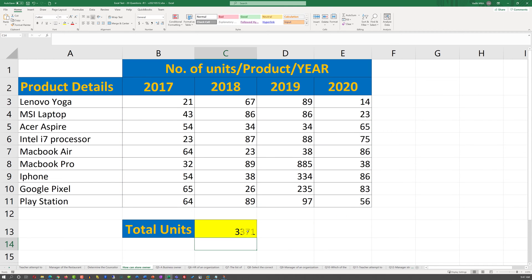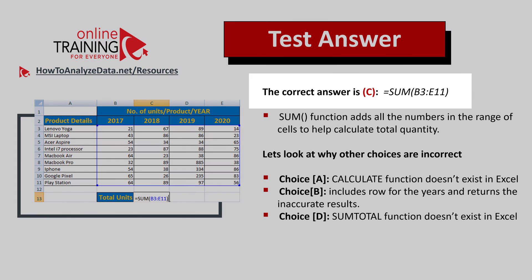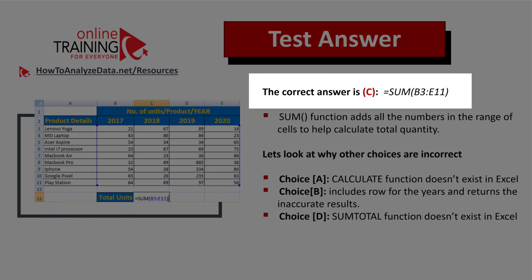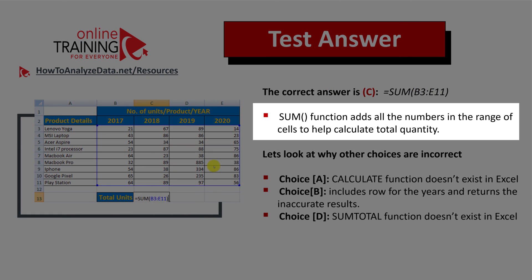We select the SUM formula and then select the range for which we're trying to add the sum. Once you hit Enter, you will see the total number of items that have been sold between 2017 and 2020. The correct choice is answer C — we use the SUM formula and select the range from B3 to E11. The SUM function adds all the numbers in the range of cells to help calculate total quantity.